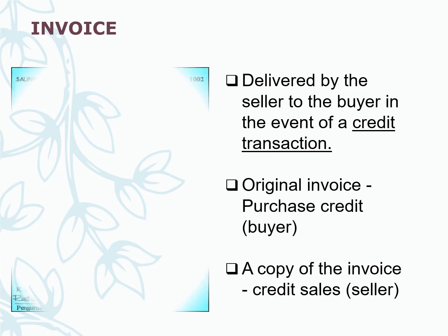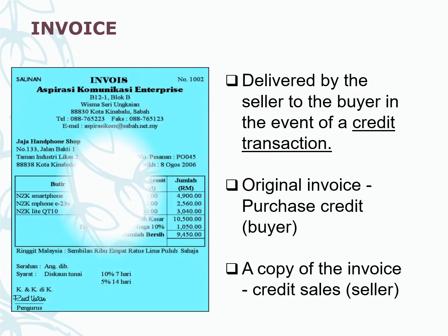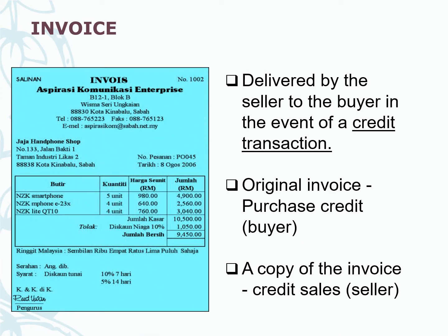Invoice. An invoice is delivered by the seller to the buyer in the event of a credit transaction. The information included in an invoice covers the goods, the quantity of goods, the cost per unit, and also the total amount.